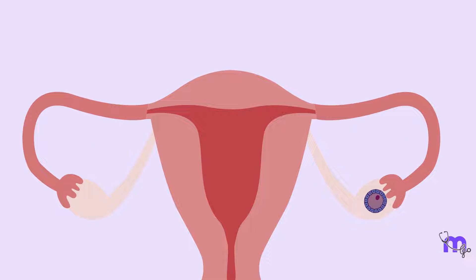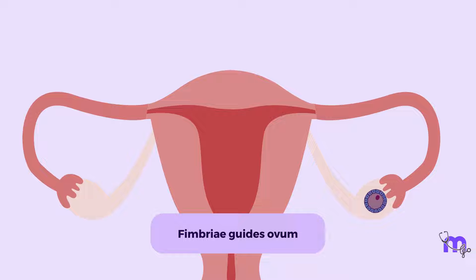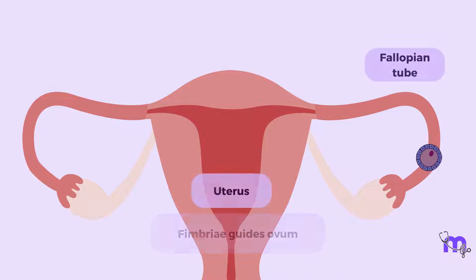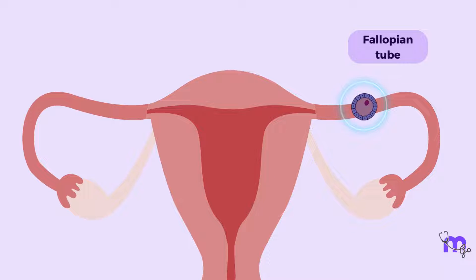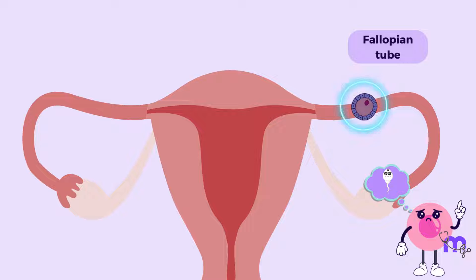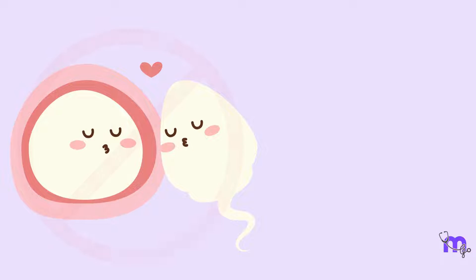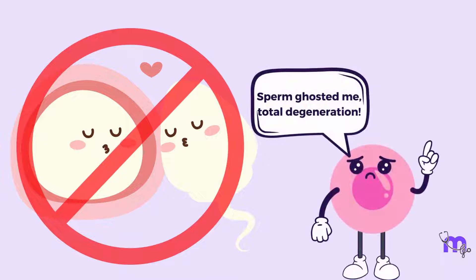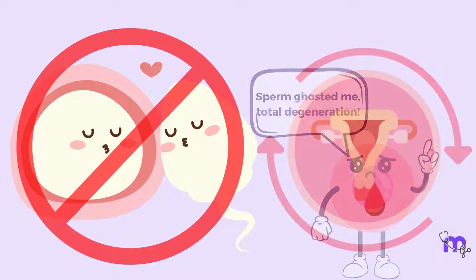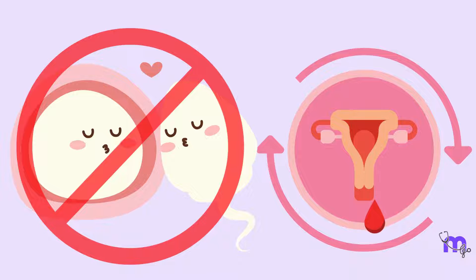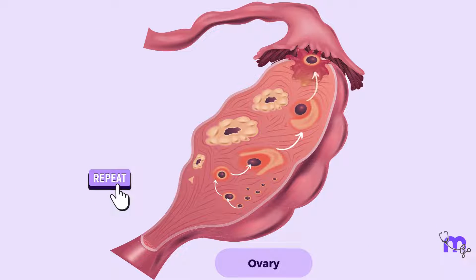Following ovulation, the fimbriae — finger-like projections at the end of the fallopian tube — sweep over the ovary, guiding the released oocyte into the tube. The oocyte is then carried along the fallopian tube by coordinated contractions of the muscular walls, where it waits for sperm to proceed with fertilization. If fertilization doesn't occur, the oocyte undergoes degeneration and is eventually absorbed by the body, and the menstrual cycle continues, setting the stage for a new cycle of follicular development and ovulation.